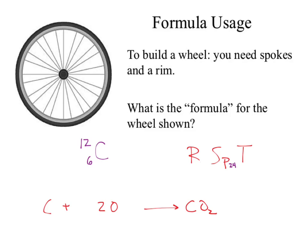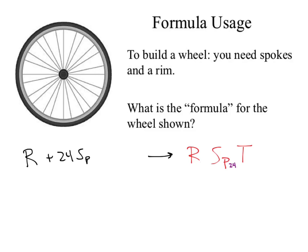So we now have a formula for how to build a wheel - one tire, just like it did for CO2. That single formula gives me a bunch of information. I know that to build this, I need one rim, 24 spokes, and one tire. Set in mathematical notation: one rim plus 24 spokes plus one tire equals one wheel.